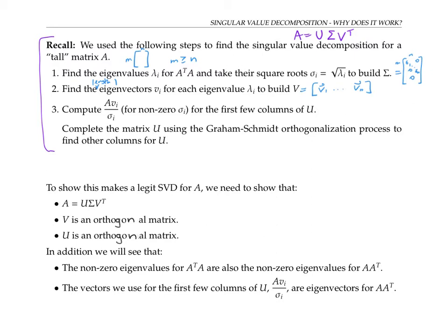Finally, we computed the first few columns of the matrix U by taking A times V sub i over sigma sub i for the nonzero singular values sigma sub i. And we got the rest of the columns for U by choosing linearly independent vectors, using Gram-Schmidt to orthogonalize them, and dividing by their lengths to make them length one. It's clear from the construction that we get a diagonal matrix for sigma. But here are the other details we need to check to make sure we have a legitimate singular value decomposition for A.